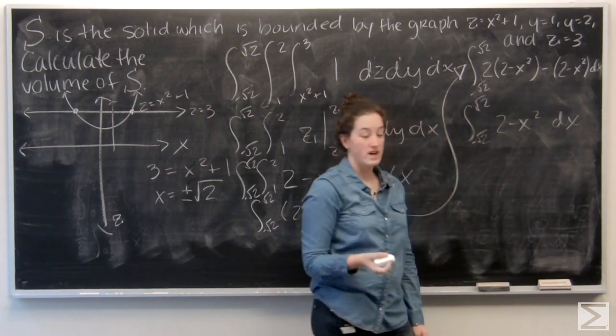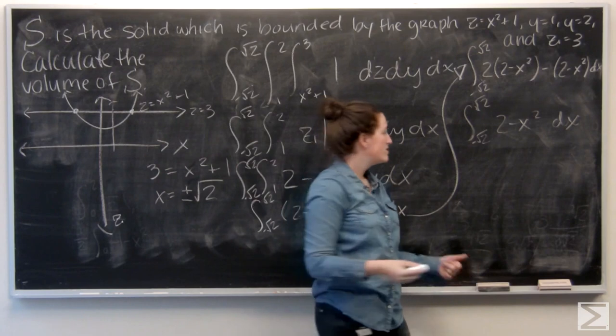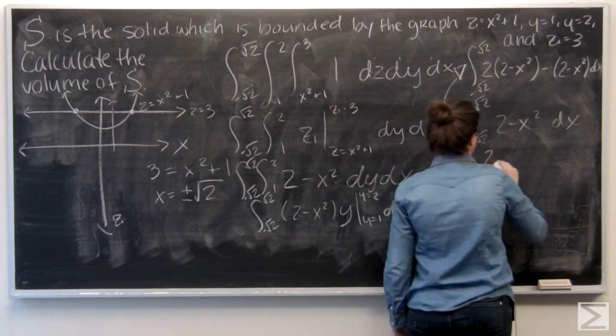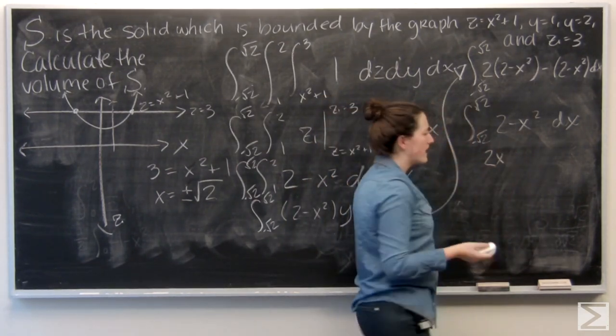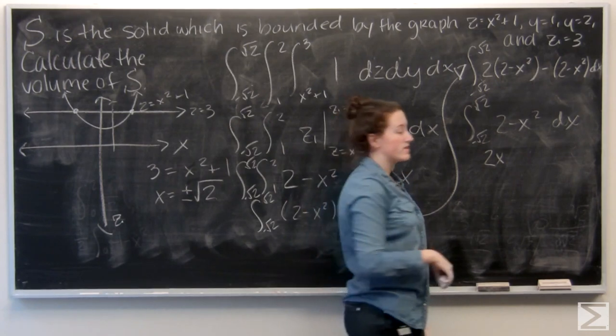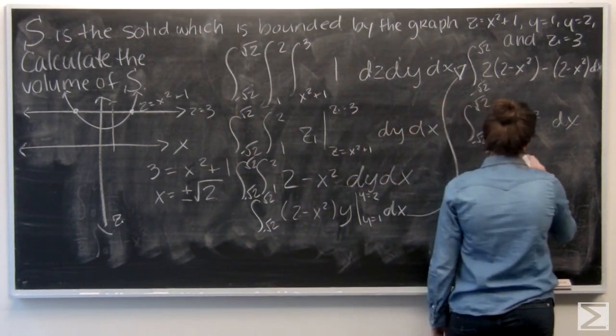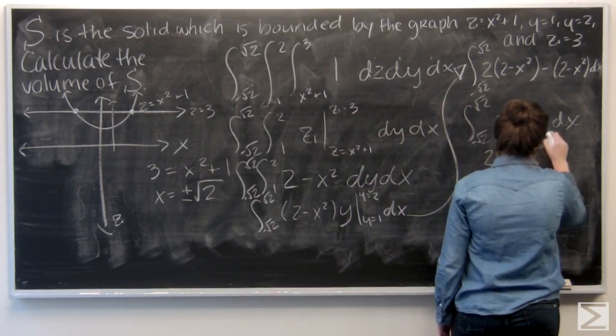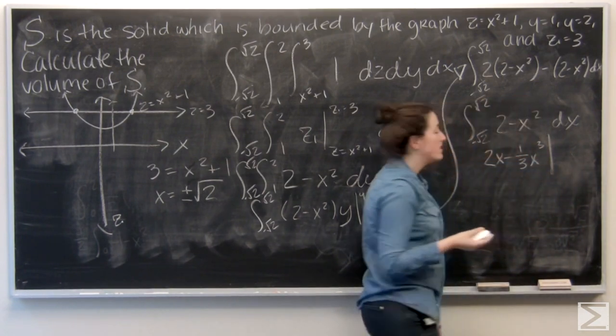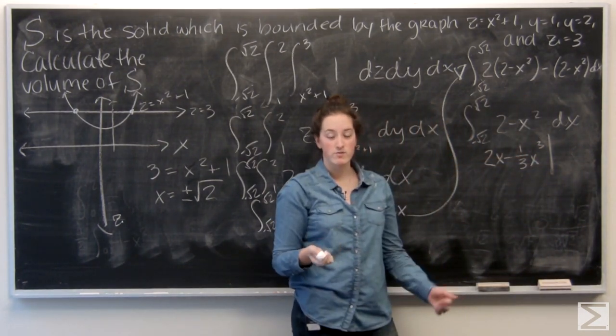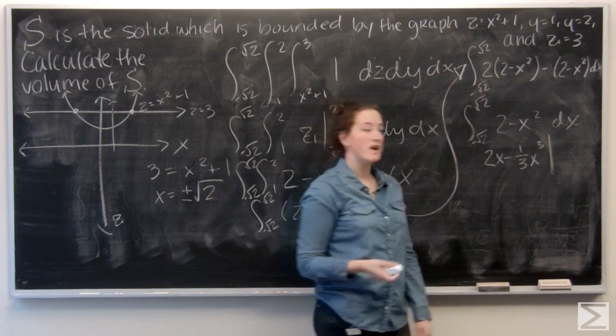So now I'm ready to integrate with respect to x. So 2 becomes 2x. And x squared becomes 1 third x to the third. And I'm ready to evaluate. So my lower x bound is negative root 2 and my upper x bound is positive root 2.